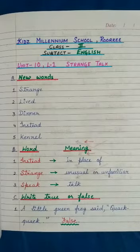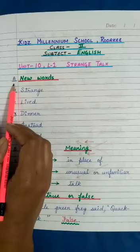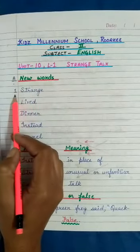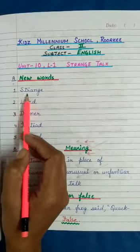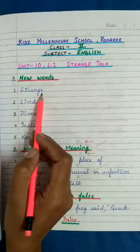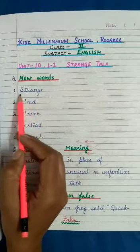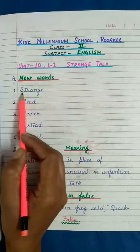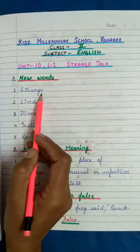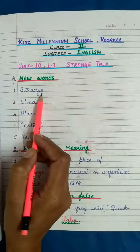So let's begin with Unit 10, Lesson No. 1. Now we come to Part A, New Words. And the first word is S-T-R-A-N-G-E. Strange.